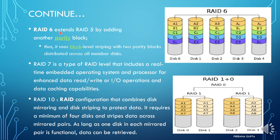RAID 6 extends RAID 5 by adding another parity block. It uses block-level striping with two parity blocks distributed across all member disks, providing extra redundancy.